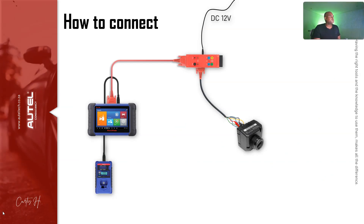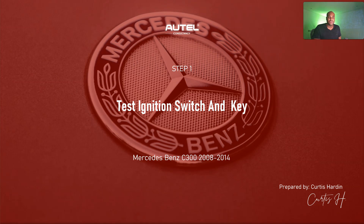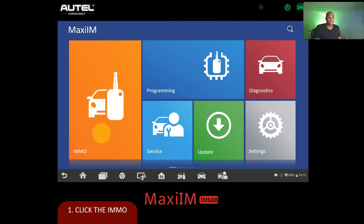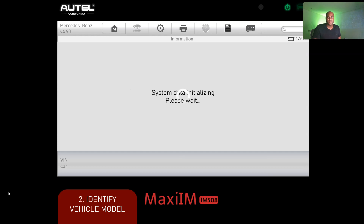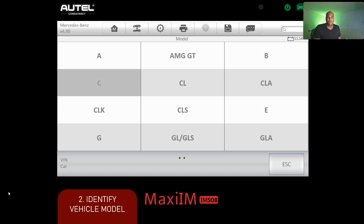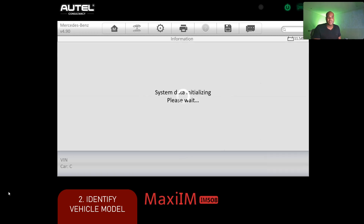For our initial connection, we have the IM508 with a USB cable into the XP400, and the GBox 2 connected to power with the special cable connected directly to the EIS. Step one is testing the ignition switch and key — think of it like making sure a remote matches your television; if they don't speak the same language, the car won't start. We'll go to AutoTEL, accept the terms, go to Mercedes, manual selection, then C-Class 2008–2014.